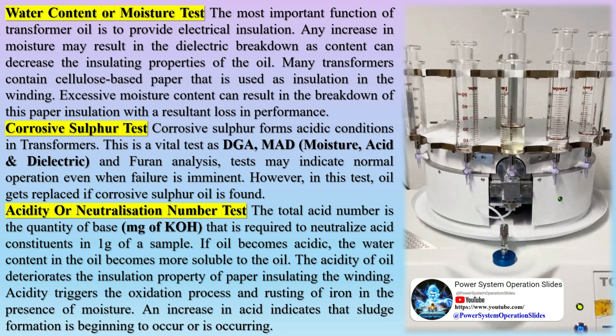Acidity or neutralization number test: the total acid number is the quantity of KOH in mg required to neutralize acid constituents in 1g of a sample. If oil becomes acidic, the water content becomes more soluble in the oil. The acidity of oil deteriorates the insulation property of paper insulating the winding and triggers the oxidation process and rusting of iron in the presence of moisture. An increase in acid indicates that sludge formation is beginning to occur.